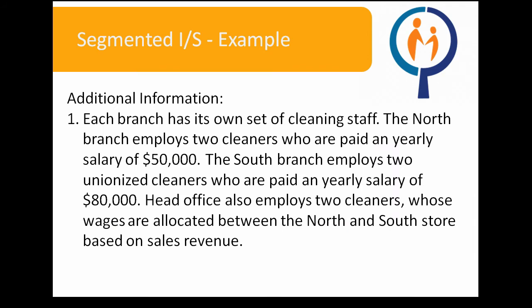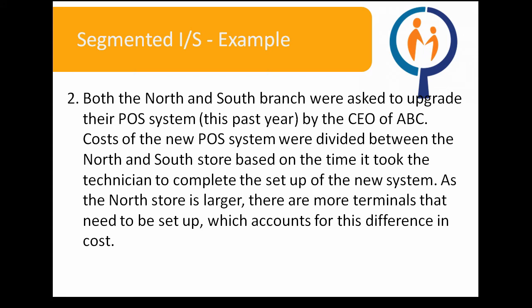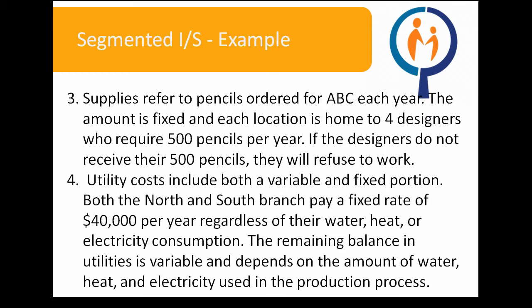Additional Information: 1. Each branch has its own set of cleaning staff. The North branch employs two cleaners paid a yearly salary of $50,000. The South branch employs two unionized cleaners paid a yearly salary of $80,000. Head office also employs two cleaners whose wages are allocated between the North and South store based on sales revenue. 2. Both the North and South branch were asked to upgrade their POS system this past year by the CEO of ABC. Costs of the new POS system were divided between the North and South store based on the time it took the technician to complete the setup. As the North store is larger, there are more terminals that need to be set up, which accounts for the difference in cost. 3. Supplies refer to pencils ordered for ABC each year. The amount is fixed and each location is home to four designers who require 500 pencils per year. If the designers do not receive their 500 pencils, they will refuse to work.